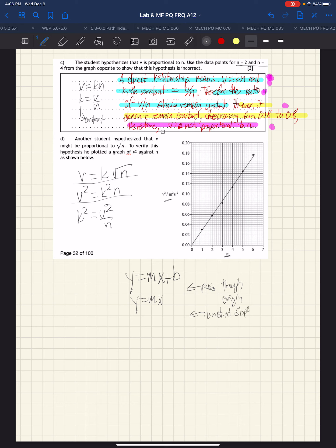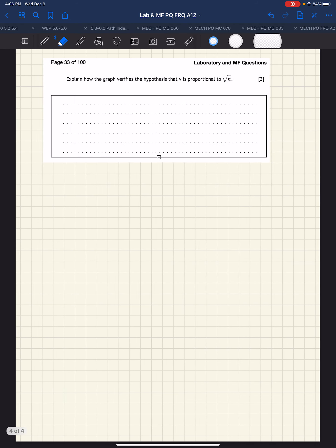And in fact, that's what it looks like it does. We don't have error bars on this, but it does look like that's what's going on. So we go to the next question: explain how the graph verifies this hypothesis.